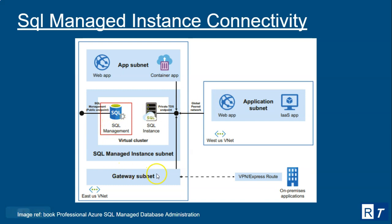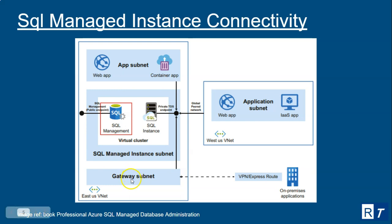For on-premise applications to access the managed instance, there must be a gateway subnet in the virtual network. A virtual gateway appliance is deployed in that gateway subnet, and on-premise applications can then connect to the SQL Managed Instance via the same private endpoint.